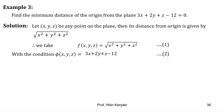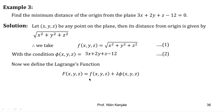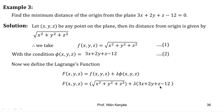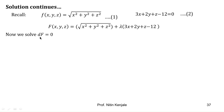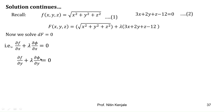Next we define Lagrange's function capital F, given by F = f + λφ. We substitute for f and φ to obtain the expression for F. Then we find Lagrange's equations by equating the total derivative of F to zero, giving three equations: ∂f/∂x + λ(∂φ/∂x) = 0, ∂f/∂y + λ(∂φ/∂y) = 0, and ∂f/∂z + λ(∂φ/∂z) = 0.